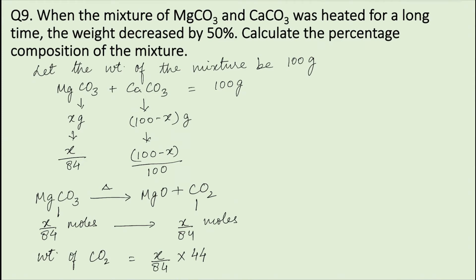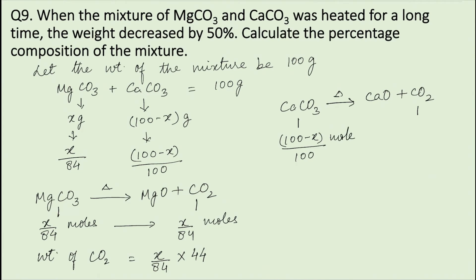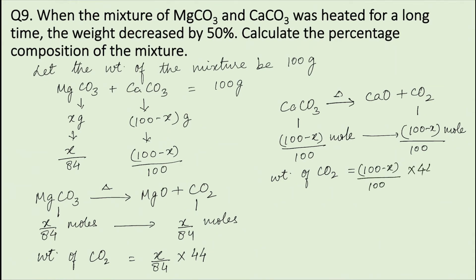The equation for the decomposition of calcium carbonate is: calcium carbonate decomposes to form calcium oxide and carbon dioxide on heating. As seen from the chemical equation, 1 mole of calcium carbonate decomposes to form 1 mole of carbon dioxide. Therefore, (100 − X)/100 moles of calcium carbonate will form (100 − X)/100 moles of carbon dioxide. The weight of carbon dioxide obtained from calcium carbonate = [(100 − X)/100] × 44.